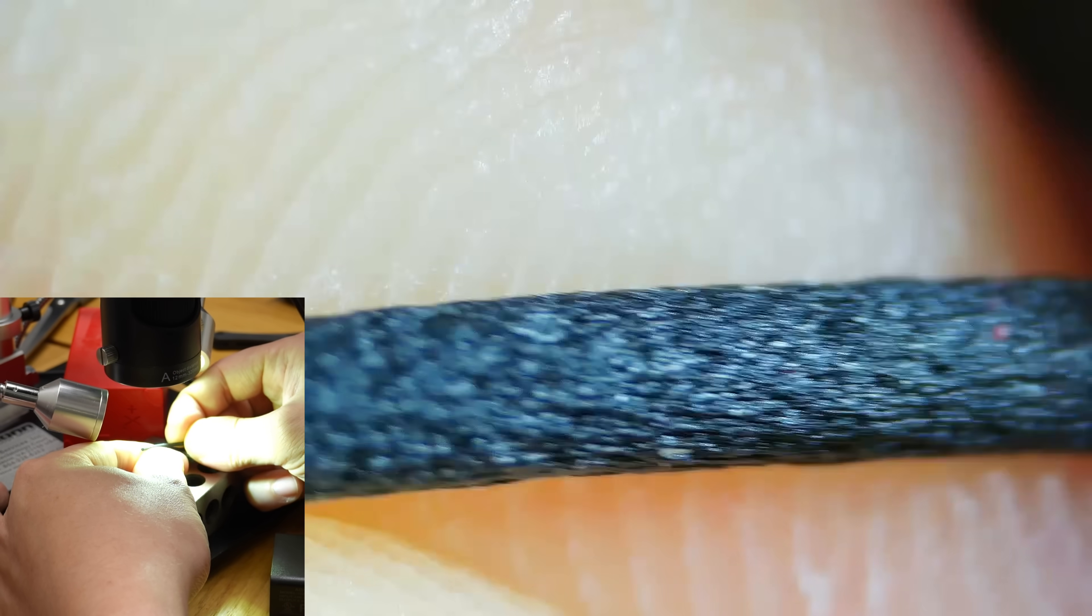These short carbon fiber reinforcements are like tiny little anti-holes. Instead of material being removed and making it weaker there, instead you're replacing it with a material that's stronger. In the same way that a bunch of small little holes in a part can weaken the overall strength of that part, in the opposite direction adding a bunch of small little pieces of something stronger can increase the overall strength of the part.